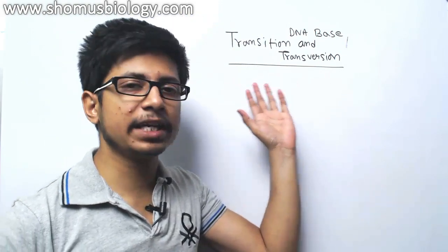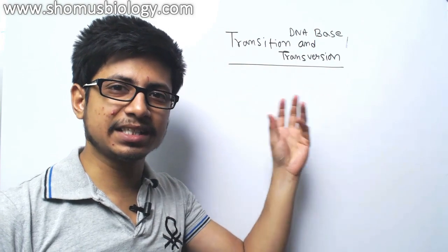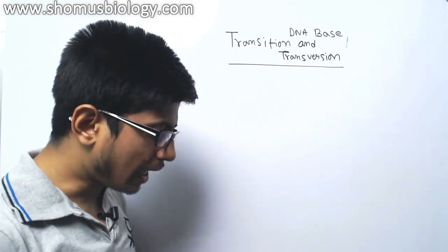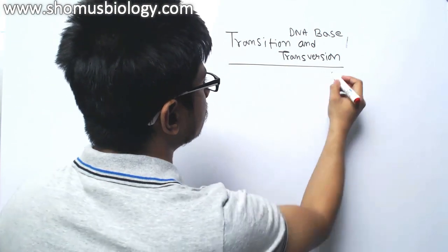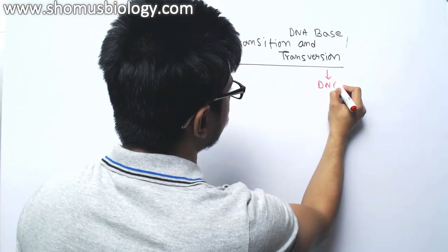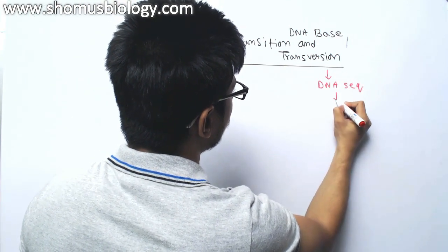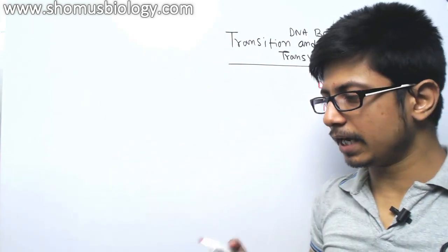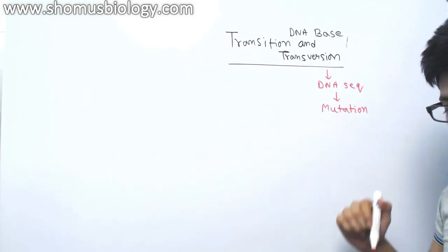Both types of changes are base changes in the DNA. We call it base substitution in the DNA that ultimately leads to the change in the DNA sequence, and that we call as a mutation. Transition and transversion of the bases in the DNA ultimately leads to mutation.